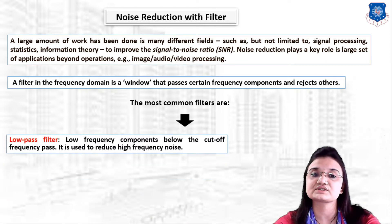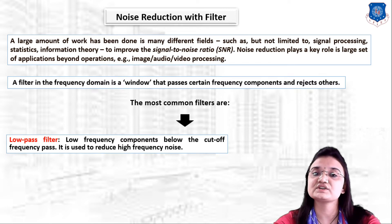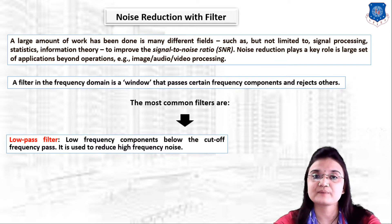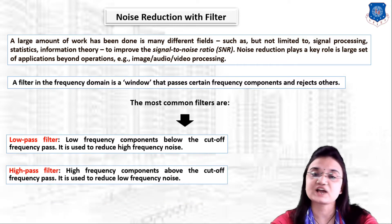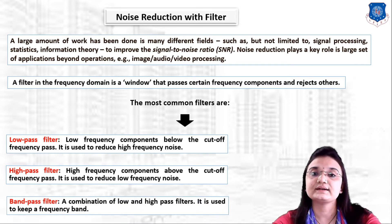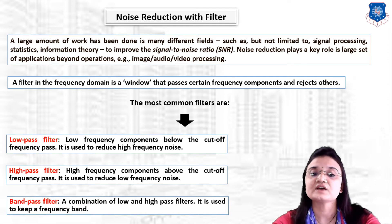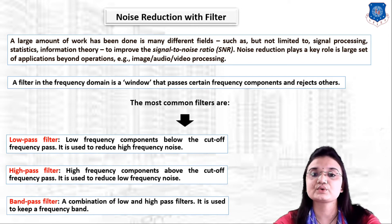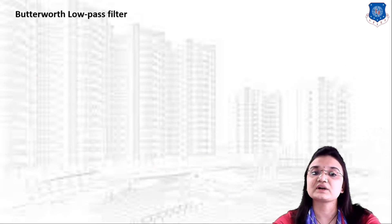The most common types of filters are: first, a low-pass filter, which is generally used to reduce high-frequency noise; second, a high-pass filter, where frequency components above the cutoff frequency pass through and it is used to reduce low-frequency noise; and third, a band-pass filter, which is a combination of low and high-pass filters used to keep a specific frequency band.